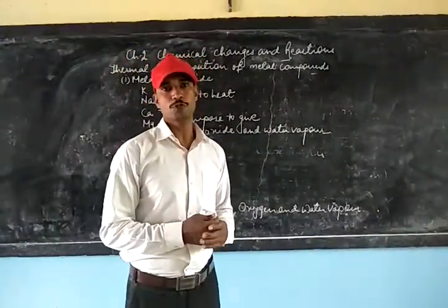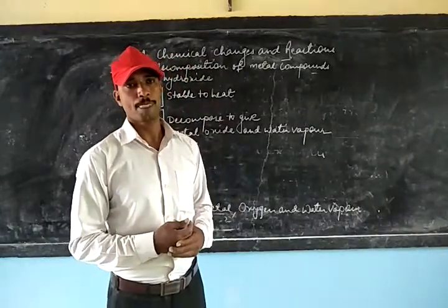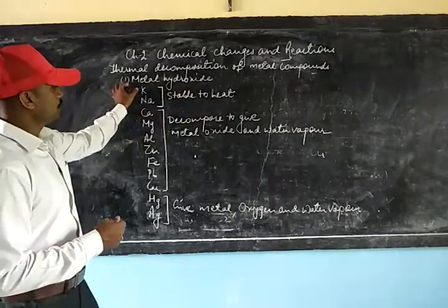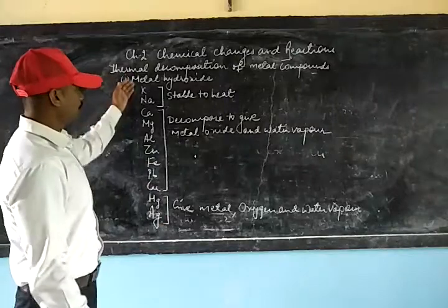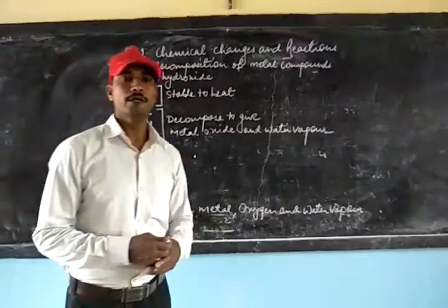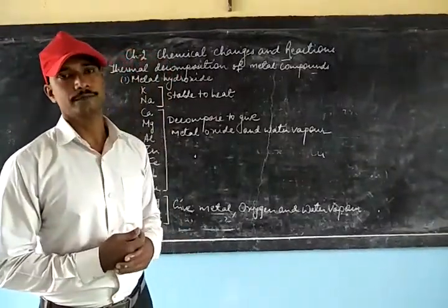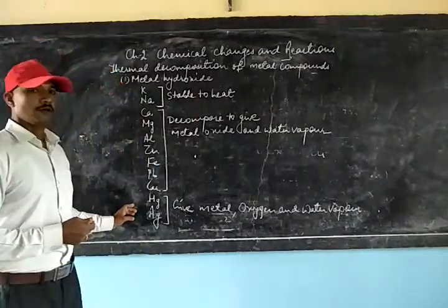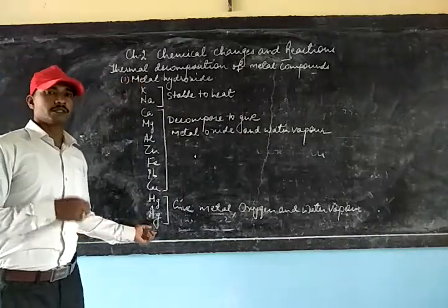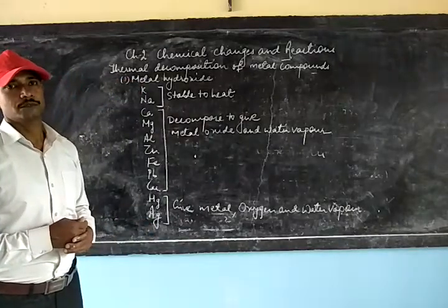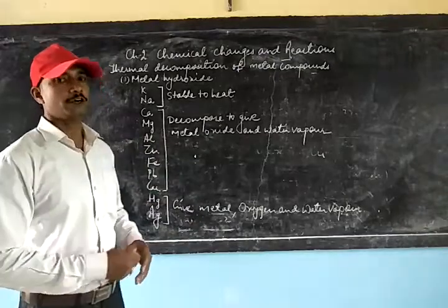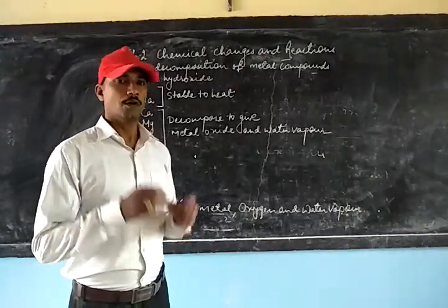Here we have to discuss about thermal decomposition of metal compounds — that is, how do metal compounds decompose when heated. We are first going to take metal hydroxides. This series you can see is called the reactivity series, where the elements are arranged in decreasing order of reactivity. In this series, potassium is the most reactive metal and silver is the least reactive metal.